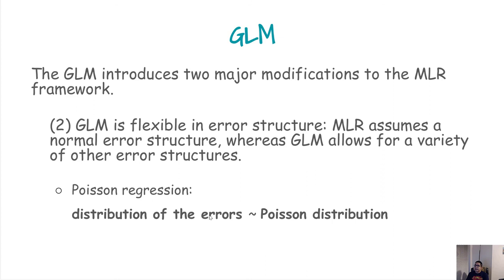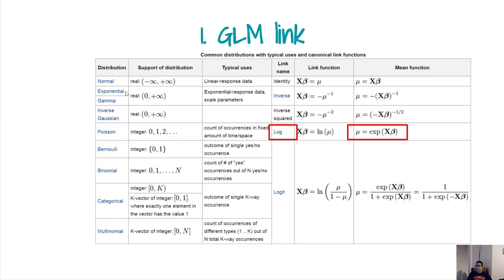The second modification that GLM makes is that it allows deviating from the normal distribution error structure. For Poisson regression, the error distribution follows a Poisson distribution, so the residuals from Poisson regression should follow a Poisson distribution. Within the GLM family there are many different regressions available, and Poisson regression is just one of them. The link function for Poisson is the log.